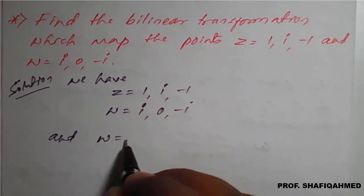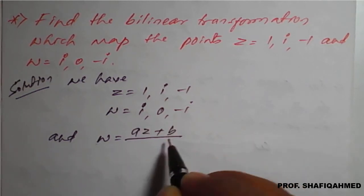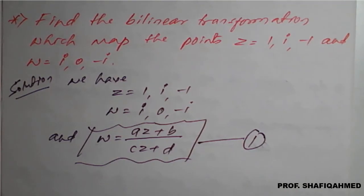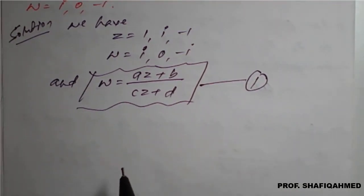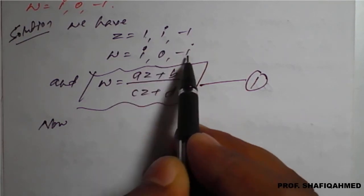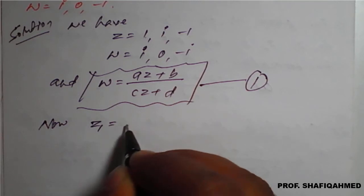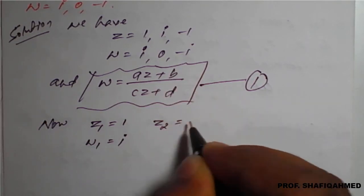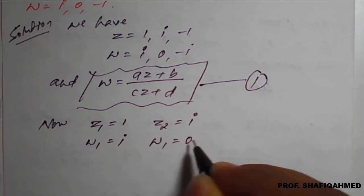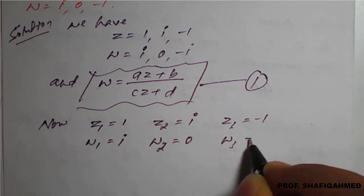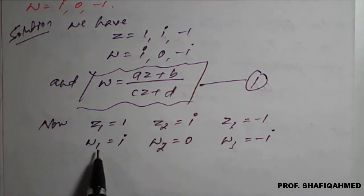We have the formula: w = (az + b) / (cz + d). This is the bilinear formula — equation number 1. Here z1 = 1, z2 = i, z3 = -1, and w1 = i, w2 = 0, w3 = -i.